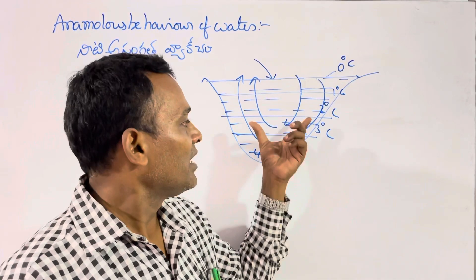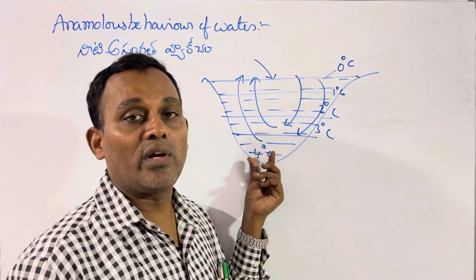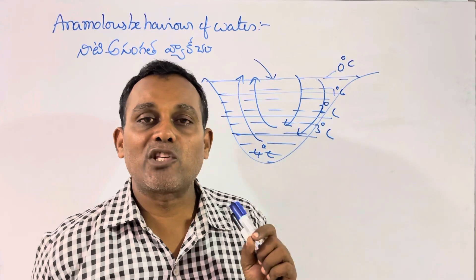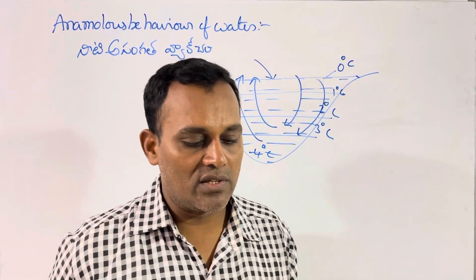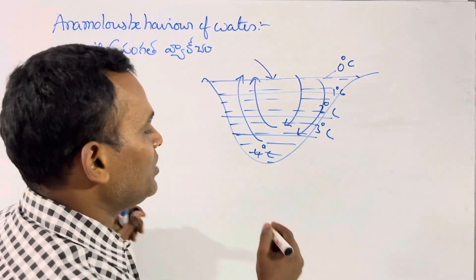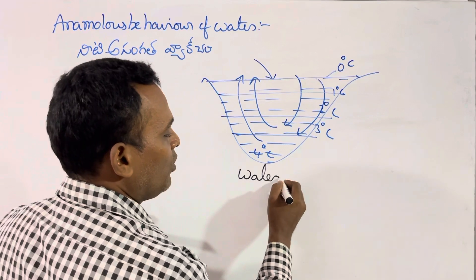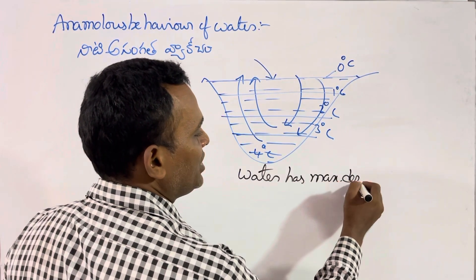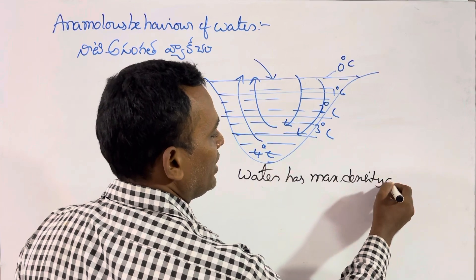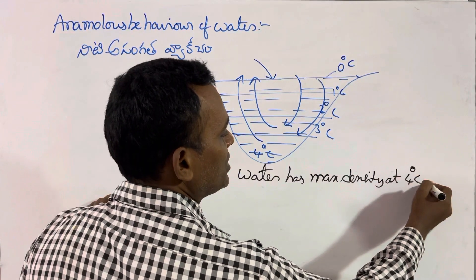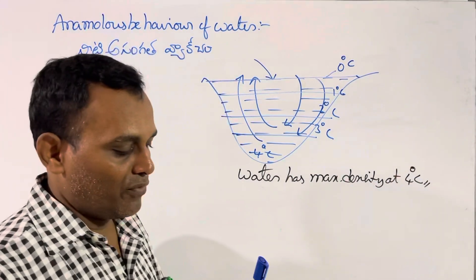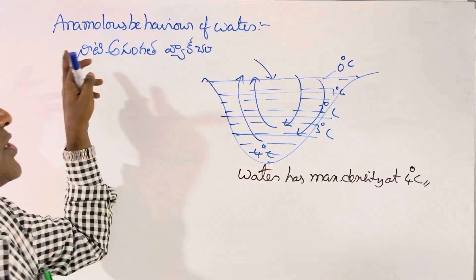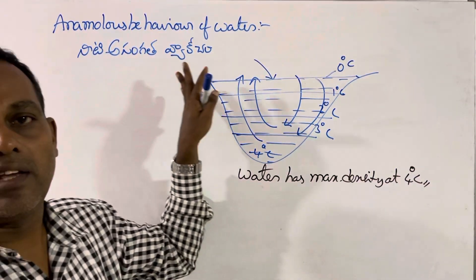At four degrees Celsius, water has maximum density. Water has maximum density at four degrees Celsius.